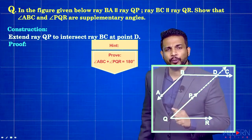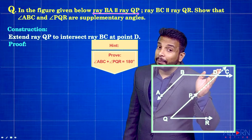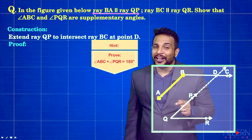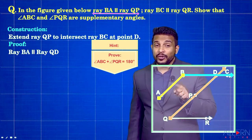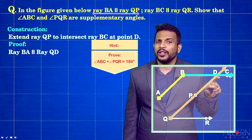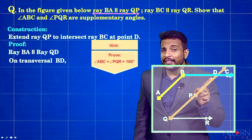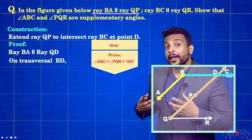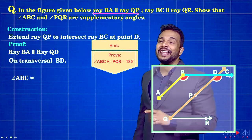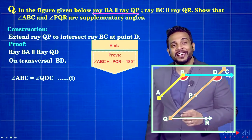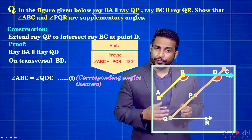Now let's start with the proof. We know that AB is parallel to QP, which is the same as QD. These two lines are parallel to each other, and BC acts as a transversal. We can identify angle ABC and angle QDC — they are a pair of corresponding angles. When lines are parallel, corresponding angles are congruent. So we write: angle ABC is congruent to angle QDC. That is result number one. The reason is the Corresponding Angles Theorem.